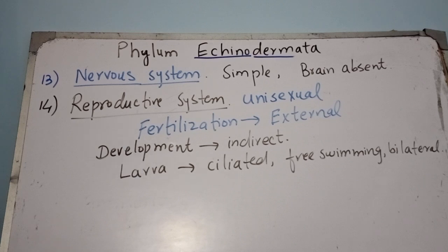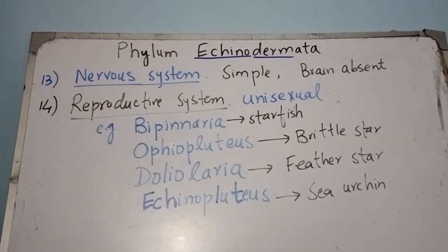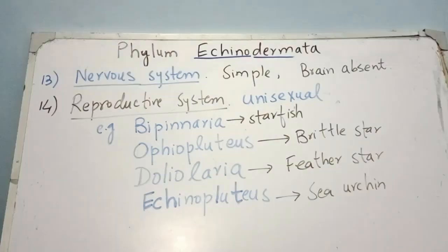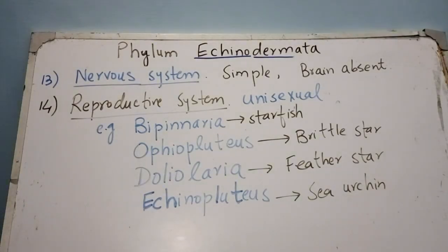A number of different types of larvae are present in echinoderms. These larvae undergo metamorphosis into radially symmetrical adults. For example, bipinnaria is the larva of starfish; ophiopluteus is the larva of brittle star; doliolaria is found in feather star; and echinopluteus is the larva of sea urchin. All these larvae change into radially symmetrical adults through metamorphosis.